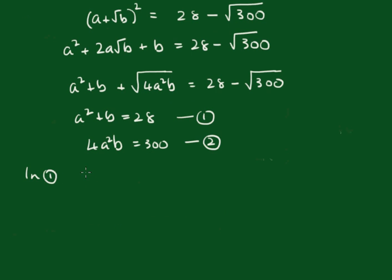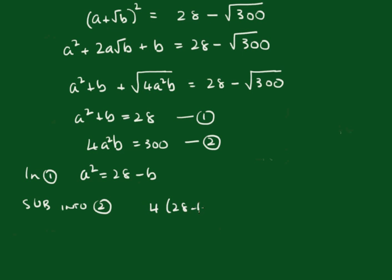Substituting equation 2 into equation 1: from equation 1 we see that a squared equals 28 minus b. Substituting into equation 2 we get 4 times (28 minus b) times b equals 300. Dividing both sides by 4 and removing the brackets we get 28b minus b squared equals 75.